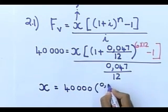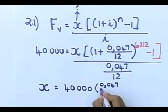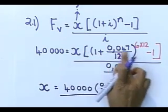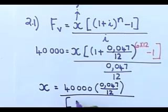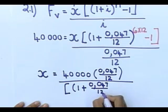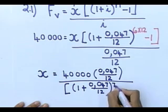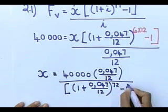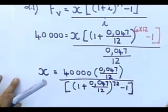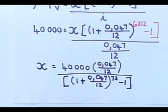Multiplied by 0.047 over 12. And you divide it by that big bracket there, everybody. 1 plus 0.047 over 12 to the power of 72 minus 1. There you go. So, you have to now put all of this in your calculator. And you must now see what answer you get to.